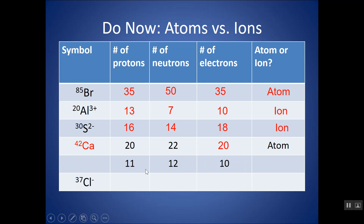Notice the next one is not an atom because the protons and electrons are different — there's one more proton than electrons, so this must have a plus charge. The fact that there are 11 protons tells me it's sodium, and I can add protons and neutrons together to get the mass number of 23. This is an ion. For the last one — also an ion — chlorine has 17 protons. 37 minus 17 gives 20 neutrons. If this were an atom, there'd be 17 electrons, but it has a 1 minus charge, so I've gained 1 electron — I have 18 electrons. This is an ion.